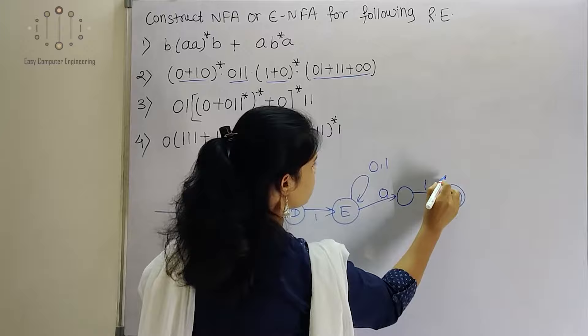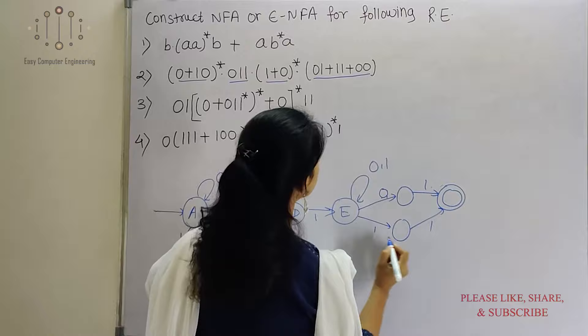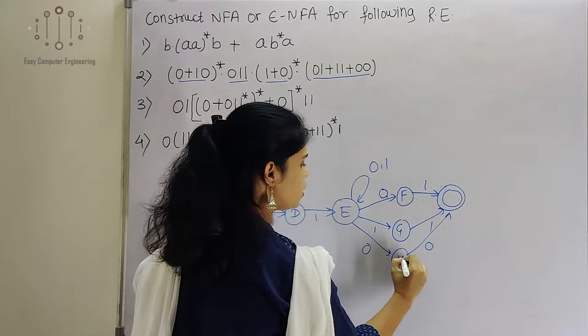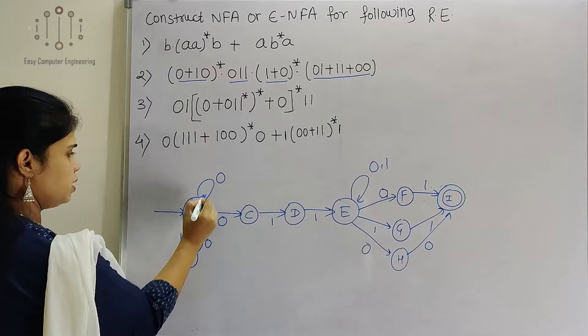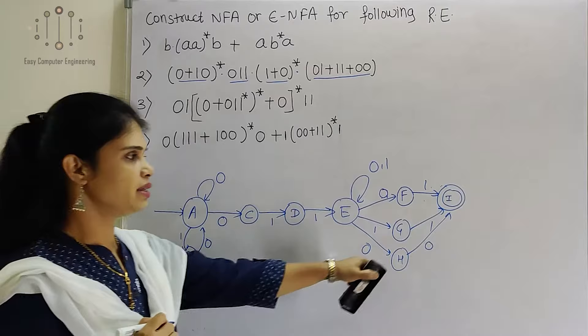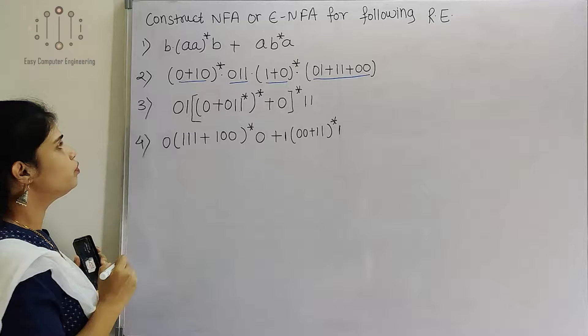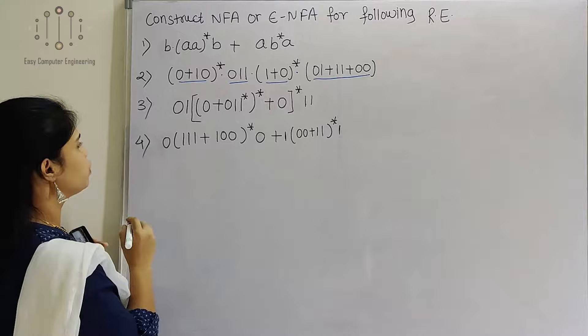So we will show 1,0,1 first, then 1,1,1, and then 0,0. We will take states E, D, F, G, H, and R. This will be our NFA because there are multiple transitions on the same input symbol. The final state I will be the final state. This is not an epsilon-NFA because there is no need for epsilon transitions.